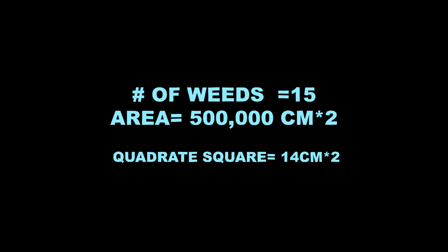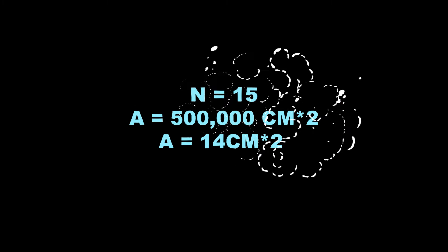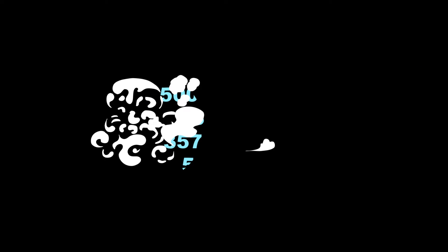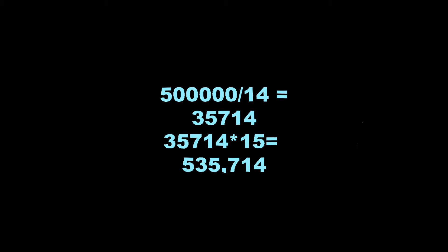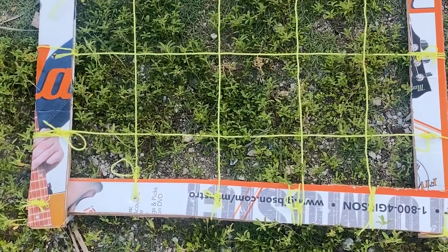Using our data as an example, the average number of weeds in each complete square is 15, and the size of the area we are analyzing is about 500,000 cm squared. The estimated size of each quadrat square is about 14 cm squared. Now let's put these values into our equation. 500,000 divided by 14 equals 35,714. 35,714 multiplied by the number of weeds in each individual square equals 535,714 weeds. So in total, there are 535,714 weeds located in our area.